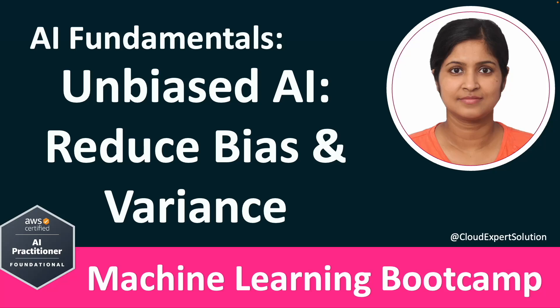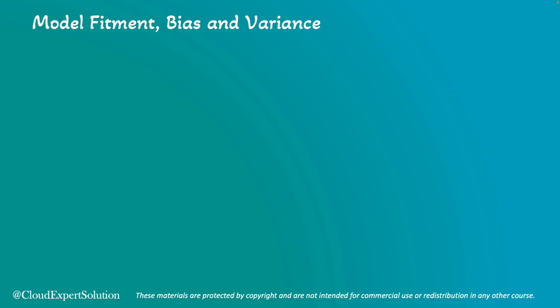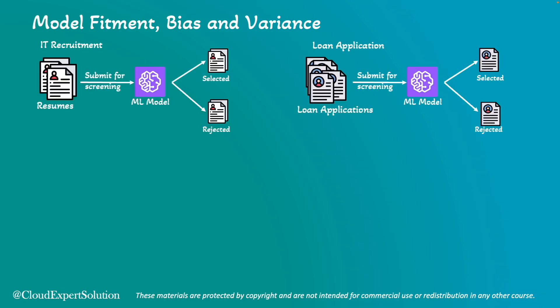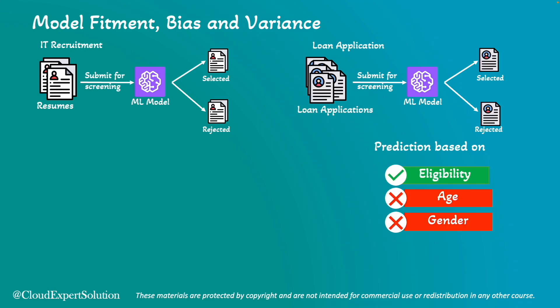Hello and welcome to the module on ensuring fairness and reducing variance and bias in machine learning. Imagine a machine learning model has been deployed to screen resumes or to decide who is eligible for a loan from piles of loan applications. This model should select candidates purely based on eligibility, not based on age, gender, race, country of origin, or even skin color. That means the prediction should be fair and without any bias.